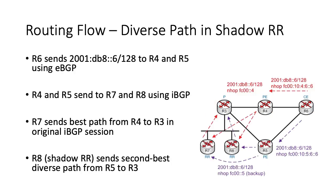Here's how it works. R6 advertises its IPv4 and IPv6 routes to R4 and R5 over eBGP as usual. R4 and R5 prefer the eBGP route from R6 over the iBGP routes from each other to reach R6's loopbacks since no policies are applied. Both of these PEs advertise their best paths to R7 and R8, the route reflectors. Each route reflector will run best path independently and should come to the same conclusion that R4 is the best path regardless of where they are placed in the network relative to the egress PEs. I'll show you how to guarantee this in the demo.